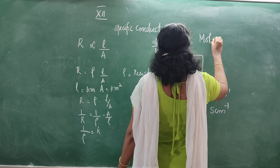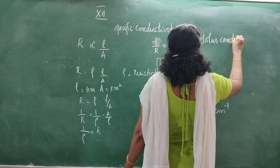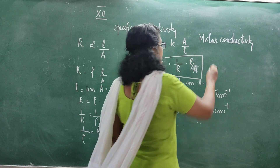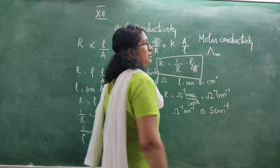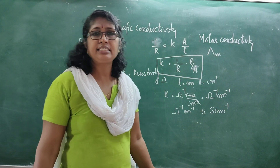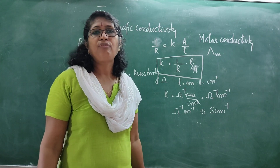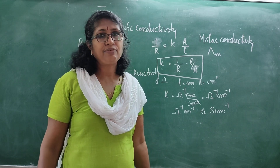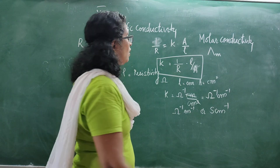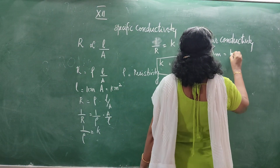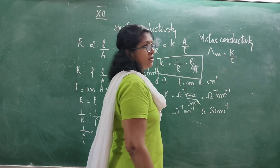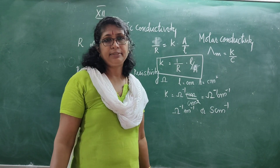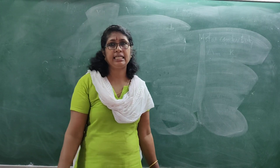Molar conductivity is denoted by λm. It is the conductivity of a solution containing one mole of the electrolyte. Molar conductivity λm = κ/c, where c is the concentration. Now we will see how to measure the conductivity. Conductivity K = (1/R) × (L/A), so we need to measure the resistance, length, and area of cross section.